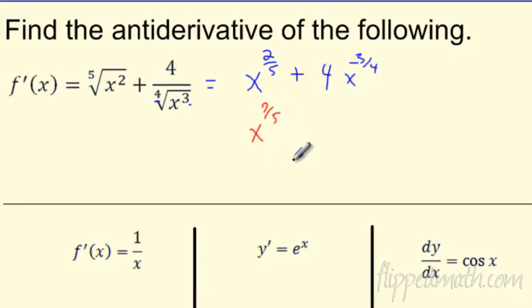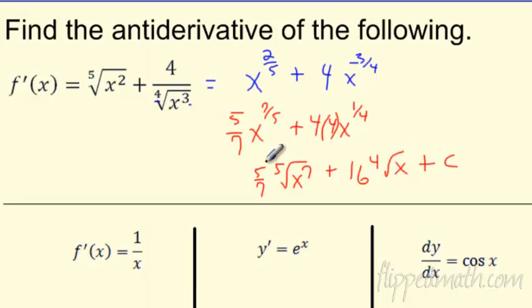Then what do you do? We're dividing by seven-fifths. I flip it and multiply. We're going to multiply by five-sevenths. Careful with your negative here. If I add one to this, I'm adding four-fourths to this, so that'll leave me with one-fourth. I've got that four. I'm going to times it by four over one, which is just 16. So really, I'm looking at five-sevenths x to the fifth root of x to the seventh power, plus 16, the fourth root of x, plus, don't forget about c. You never want to forget about c.